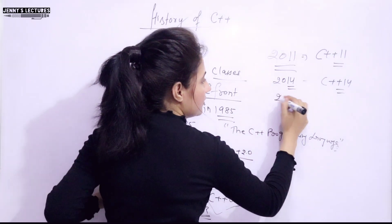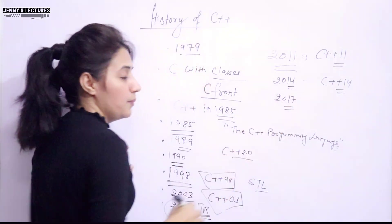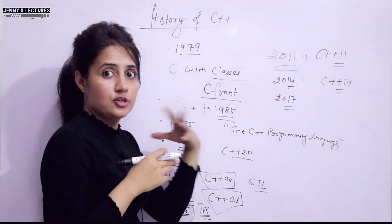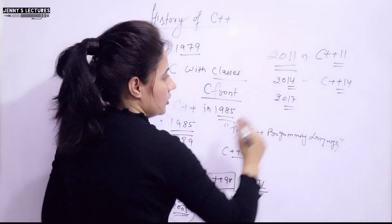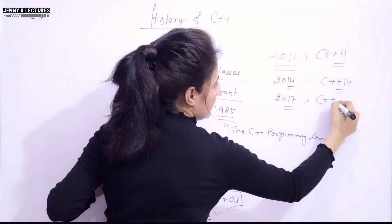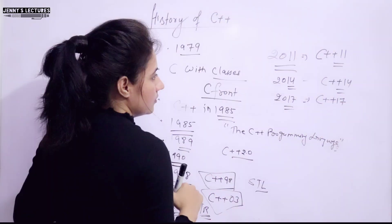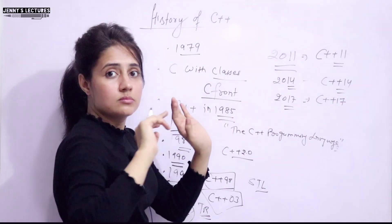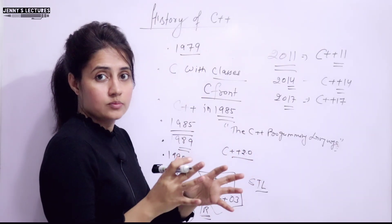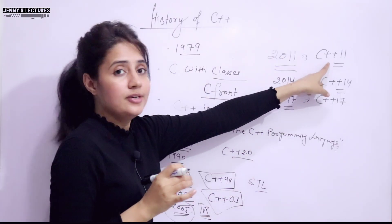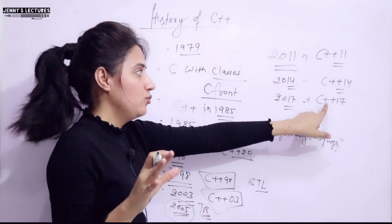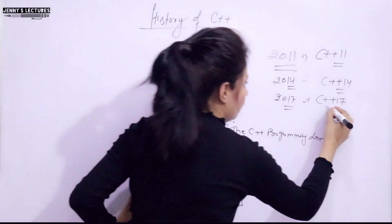Then in 17, again, major release was there with the addition of new features and with a great changes in this version that was known as C++ 17. Like in this, they removed the register keyword. It was unused and reserved register keyword. In 11, it was deprecated. It was removed in C++ 17 version.